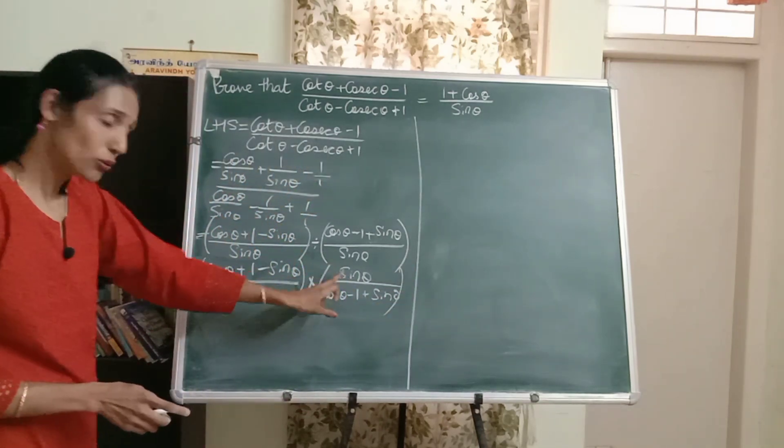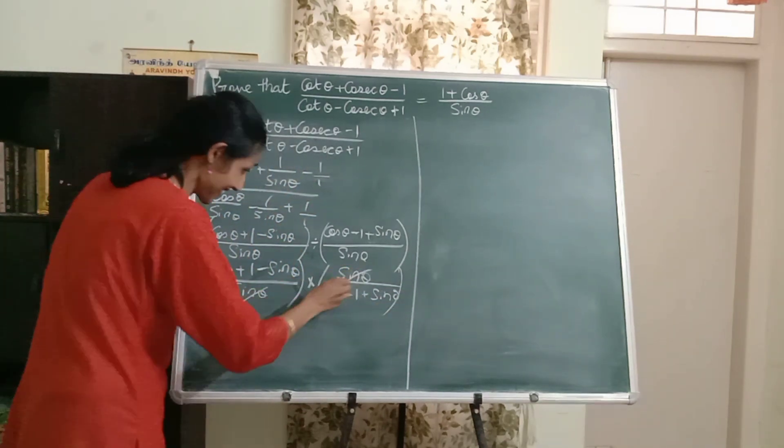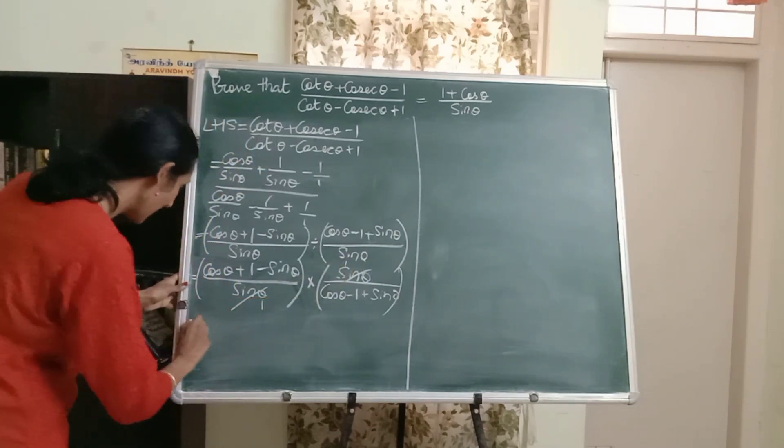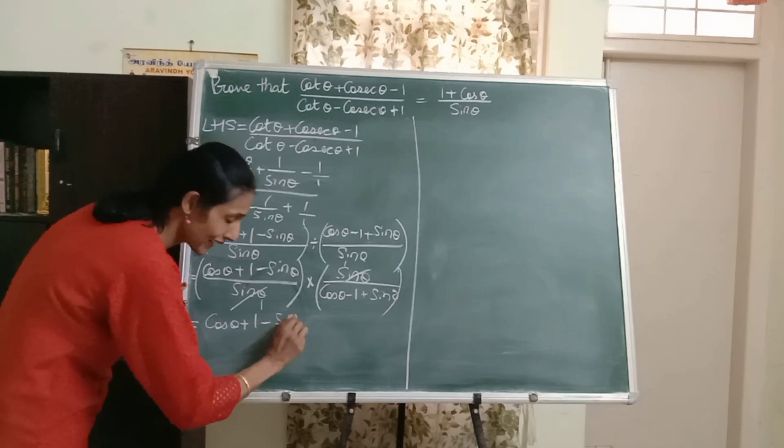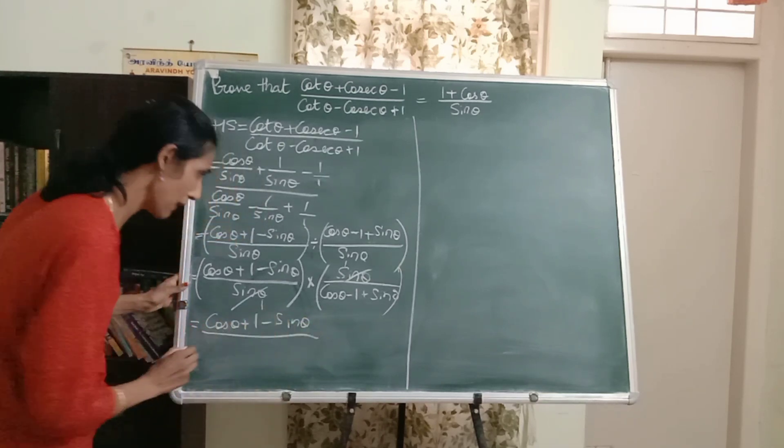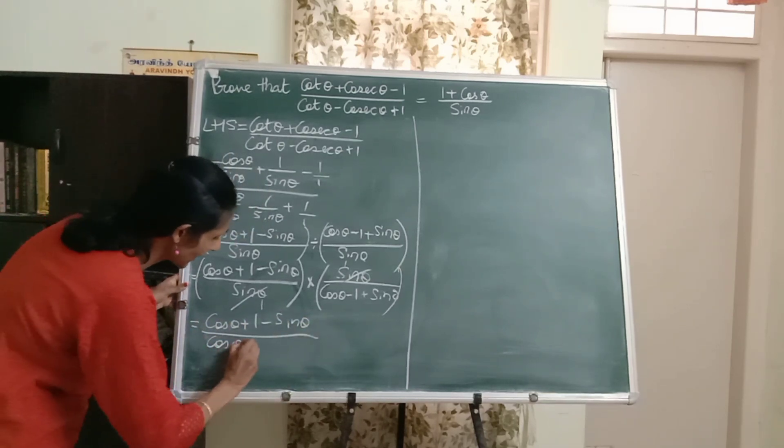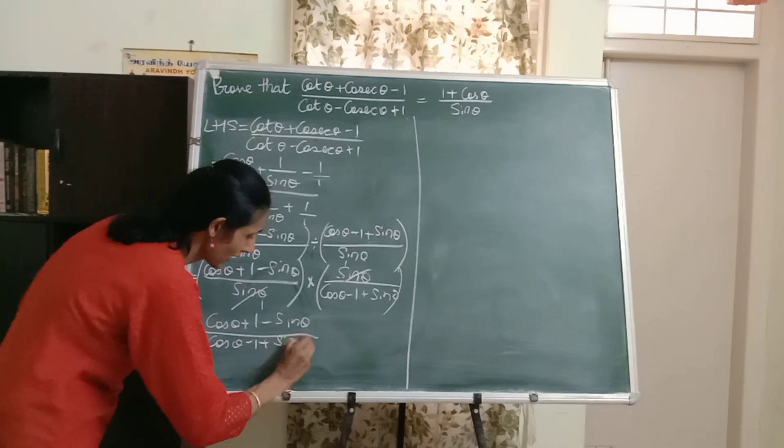Did you observe? I've got a sine in numerator and denominator. That's great, so I can cancel it out. What are we left with? Cos theta plus 1 minus sine theta divided by cos theta minus 1 plus sine theta. Did you observe, friends? These are the same terms. Only thing is the signs are different.